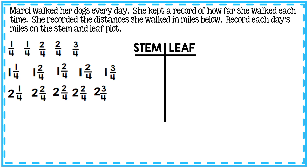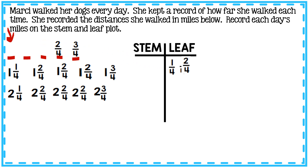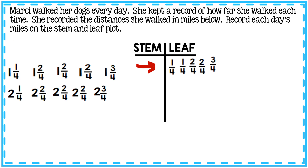My numbers start with one-fourth. All of these days walked do not have a whole number — Marcy only walked less than a mile on these days, so those go on the leaf side. One-fourth is the least valued day walked, so it goes first. Then one-fourth again, two-fourths, two-fourths, and three-fourths. In this first row there is no whole number.